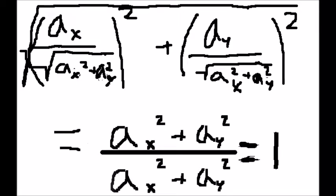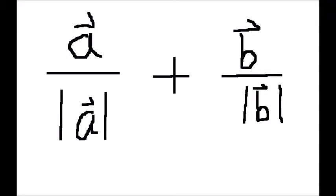Elementary, my dear Watson. Therefore, we simply add the two unit vectors together to get the angle bisector of any two vectors. Our solution, therefore, is vector A divided by the magnitude of vector A plus vector B divided by the magnitude of vector B.